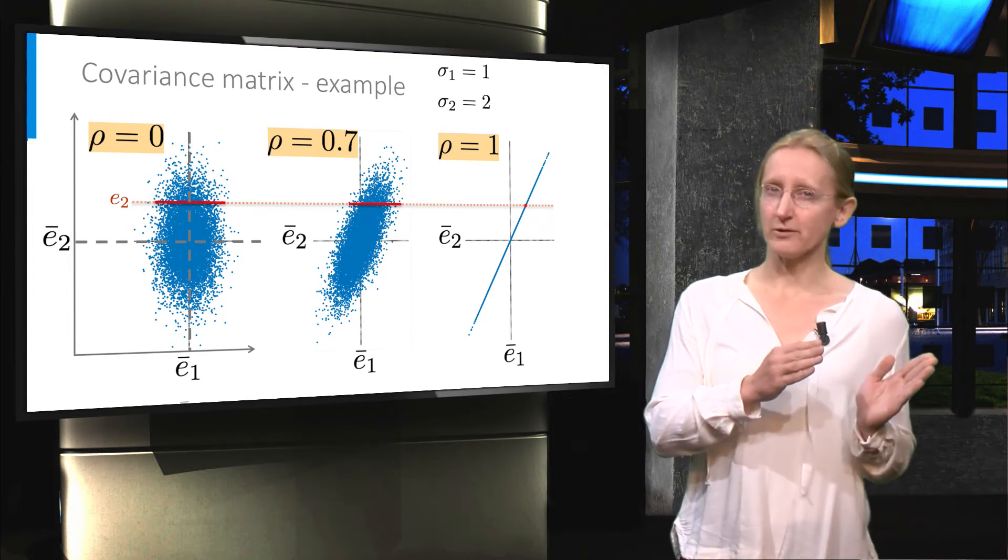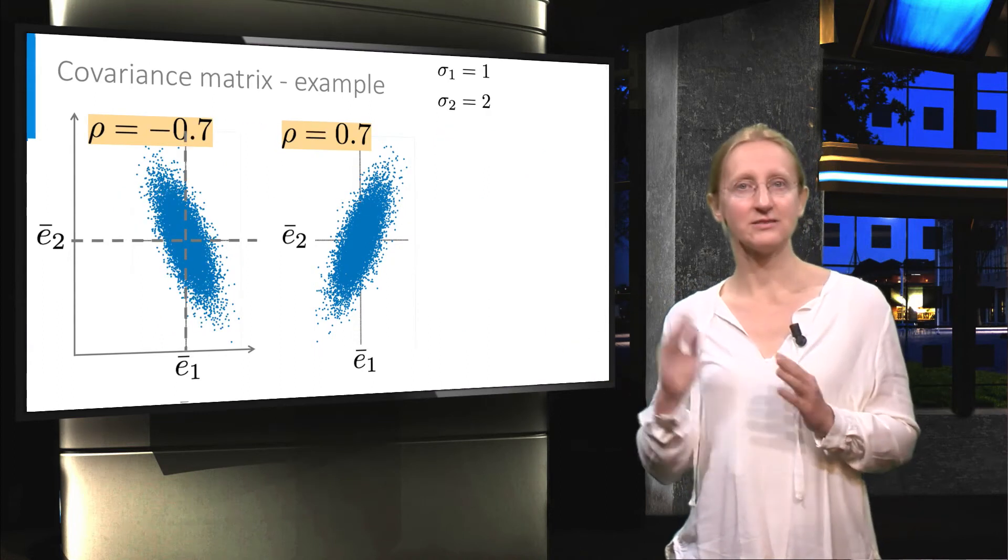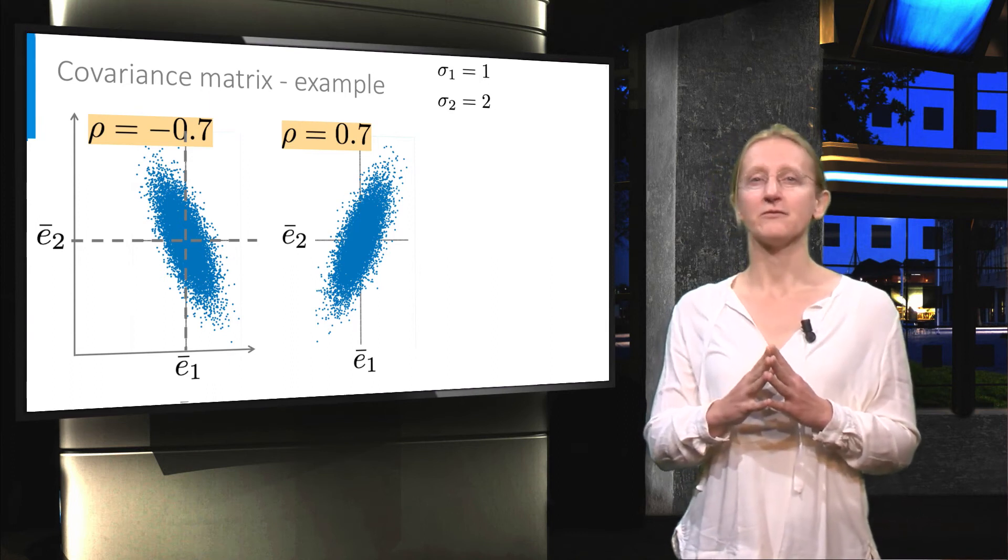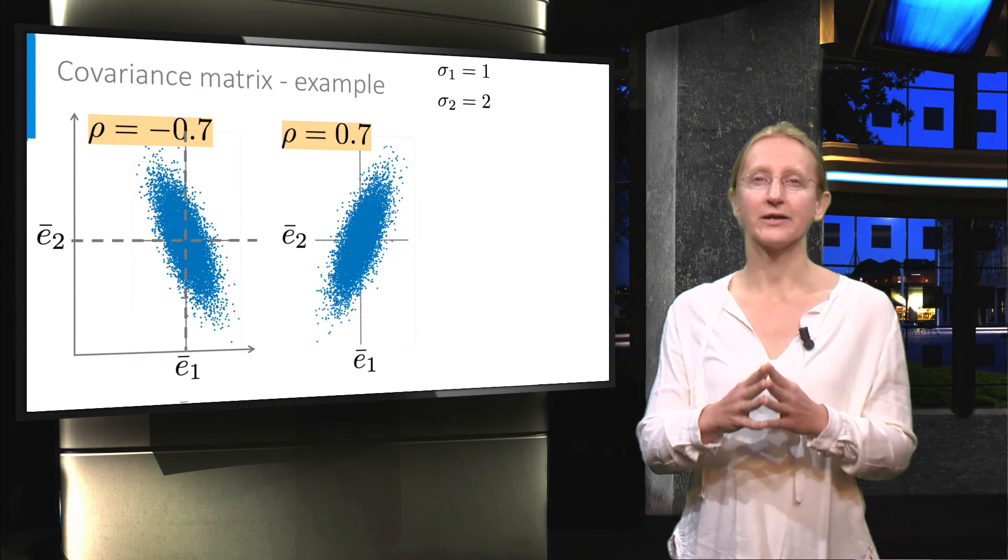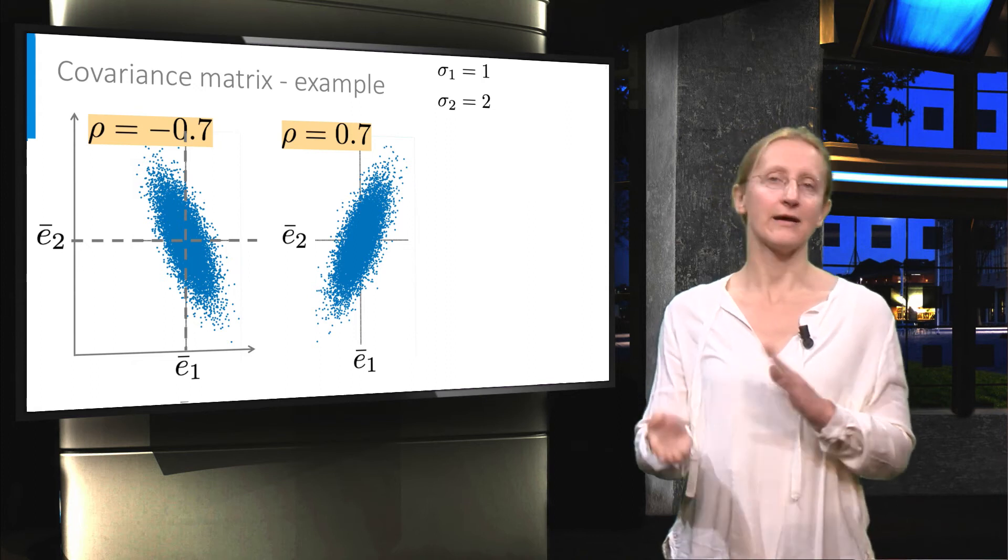If on the other hand the two variables would have a negative correlation, we would get the opposite as seen in the plot on the left hand side. A value larger than the mean for e1 will more likely give you a smaller than the mean for e2 and vice versa.